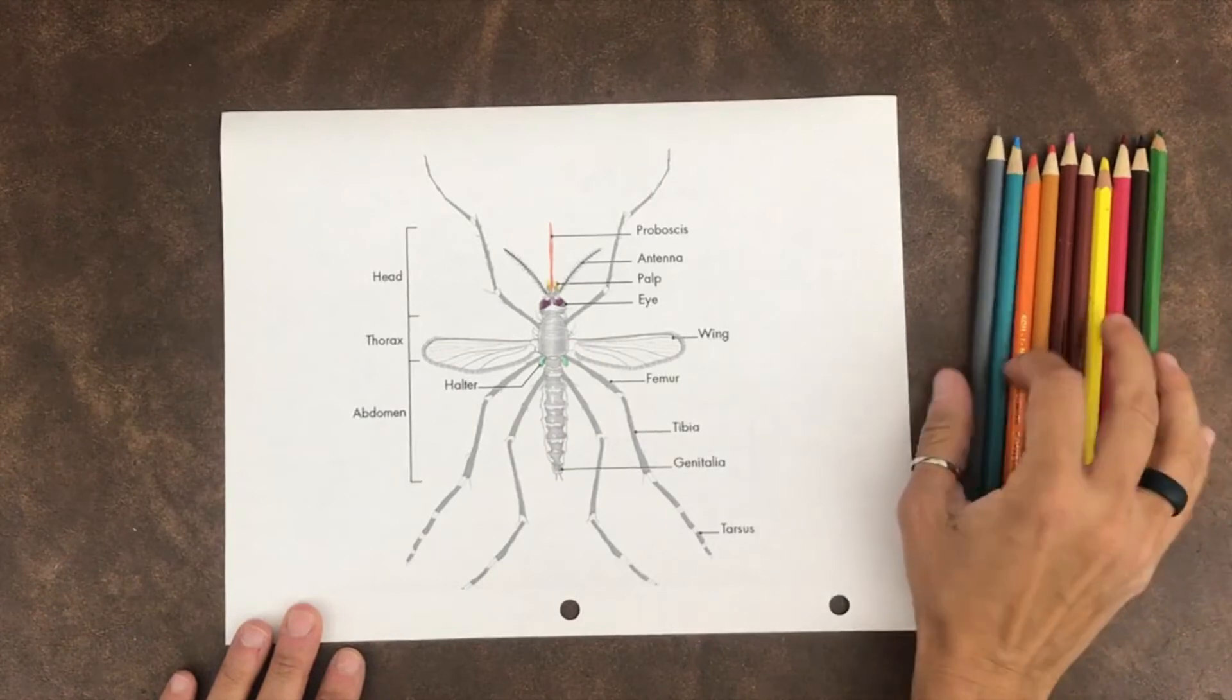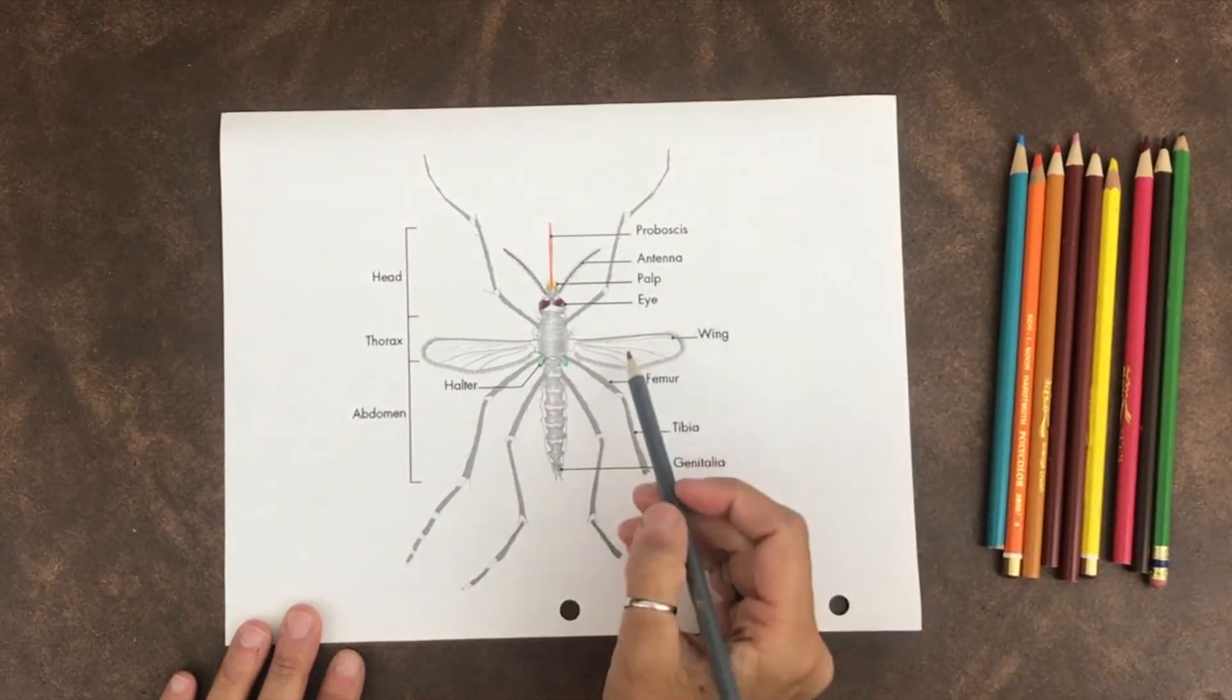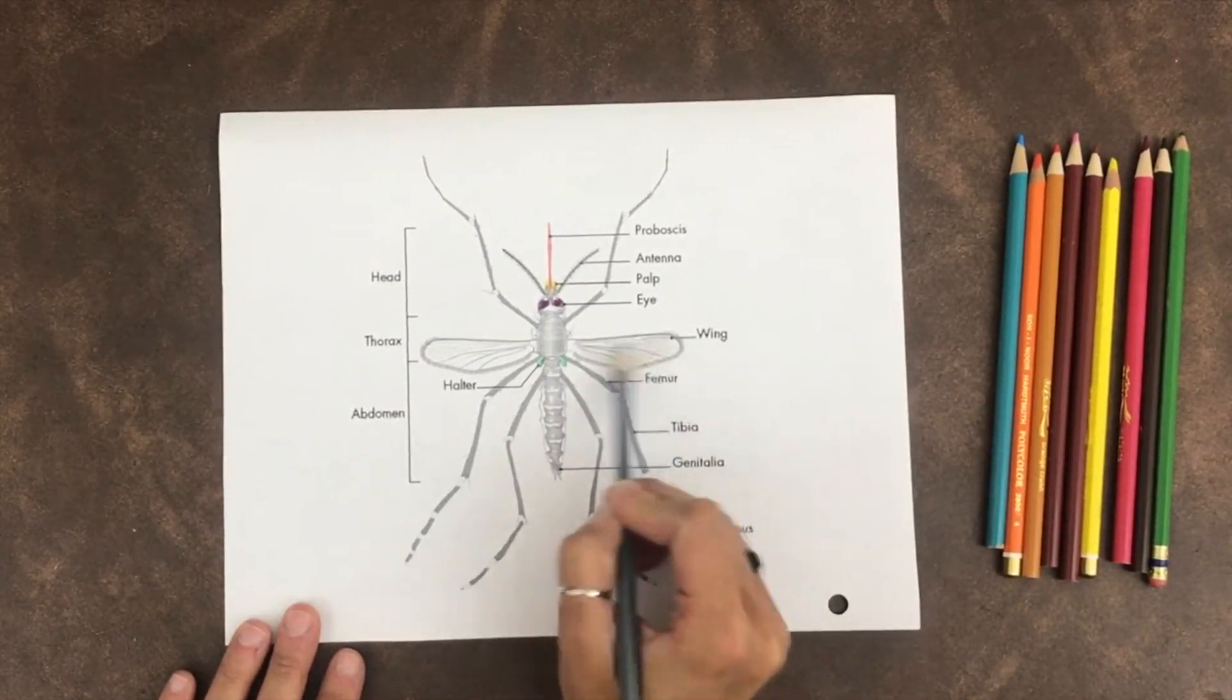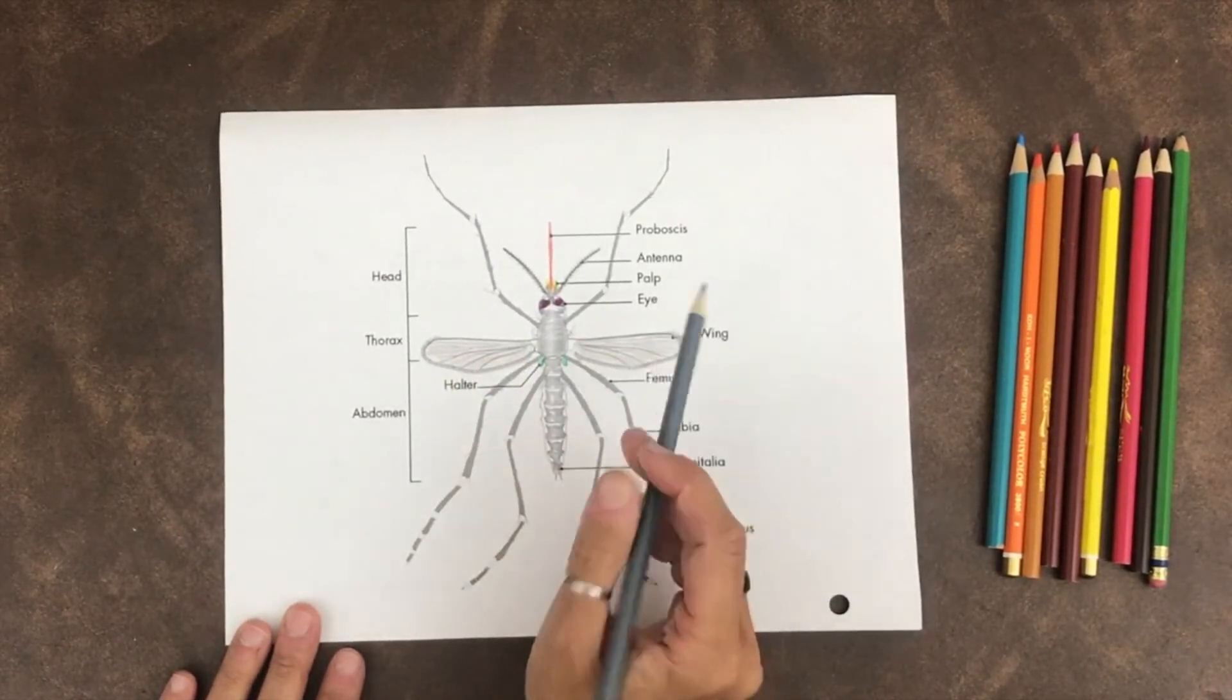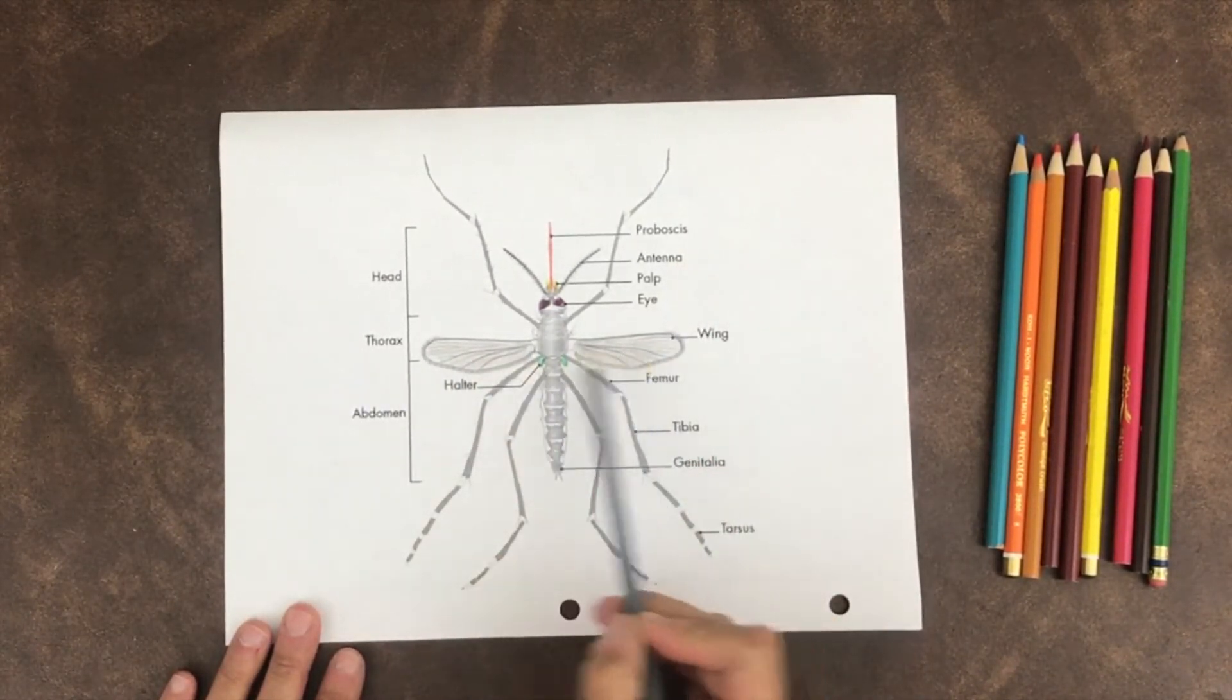And then of course, the wings. The wings are used for flying, and there are two of them.